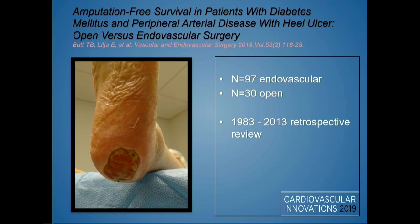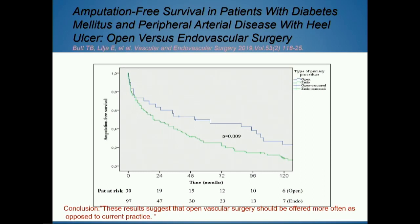Similarly, a recent study on heel ulcers examined whether endovascular healed as well as open procedures. Heel ulcers represent the sickest patients at highest risk of major lower extremity amputation. The blue curve shows amputation-free survival with open procedures and the green with endovascular. At 12, 24, 48, and up to 120 months, amputation-free survival was much better with open. They concluded that open vascular surgery should be offered more often. It's one report with limited numbers, but we need to report our own outcomes if we feel ours differ.